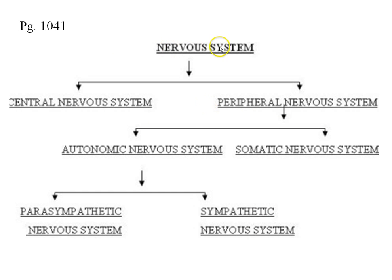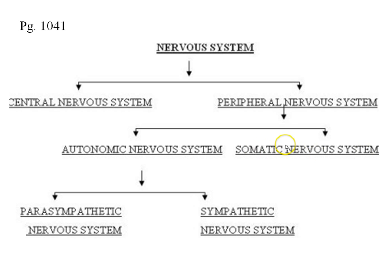The nervous system is composed of two parts: the central nervous system and the peripheral nervous system. The central nervous system consists of only two things — the brain and spinal cord. All the other nerves in your body make up the peripheral nervous system, which is divided into two parts: the autonomic nervous system and the somatic nervous system. Somatic means it's under your control — it's voluntary — and we're talking about controlling muscle cells. Motor neurons are attached to muscles, and it's voluntary, under your control — those are the neurons attached to things like your biceps.